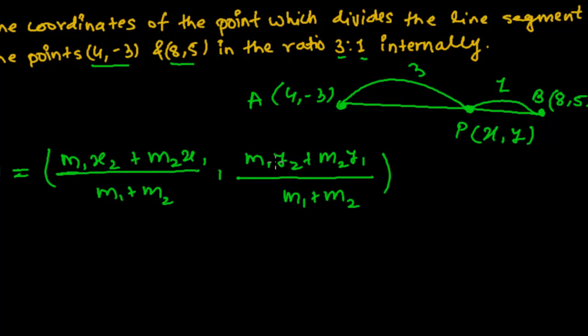Here, M1 and M2 are given. This is actually M1, and this is actually M2. This is the ratio M1:M2, that is 3:1.